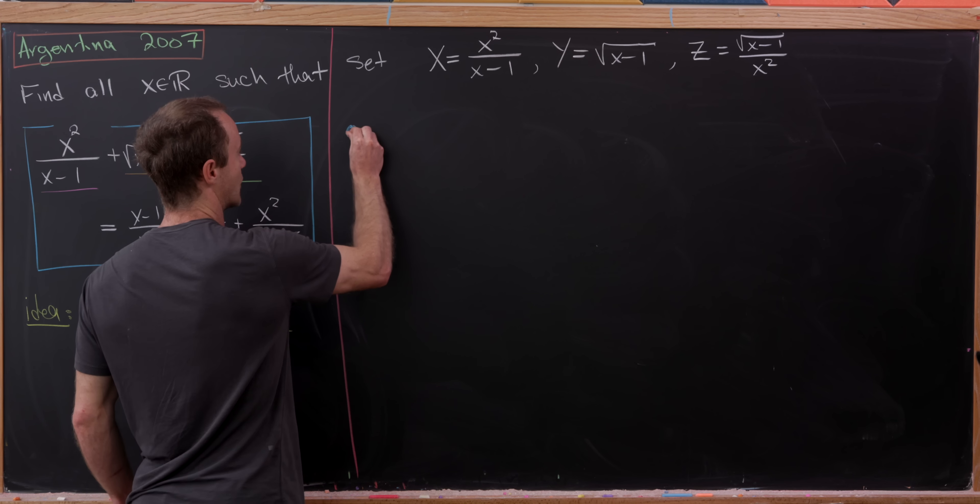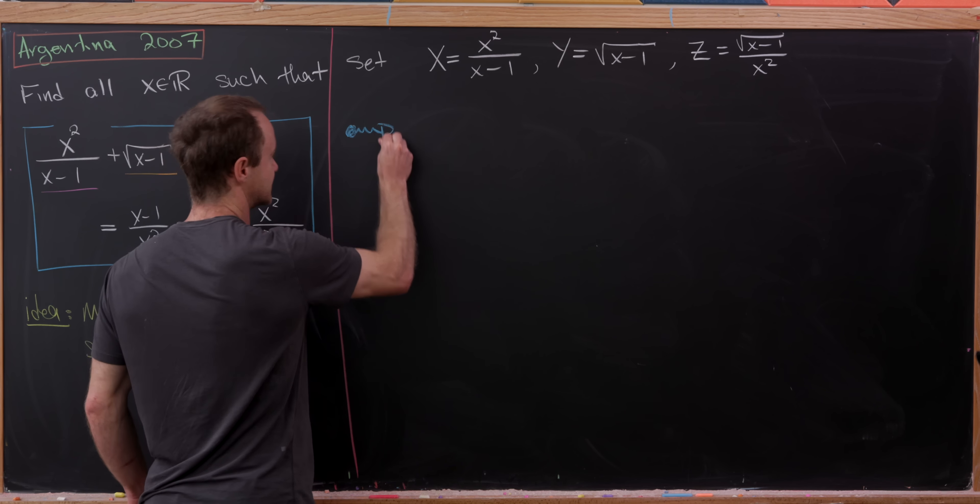Today we're going to look at a pretty nice algebra problem that presents itself as being kind of difficult and not very fun, but in the end has a nice solution. We want to find all real numbers x satisfying the equation: x squared over (x minus 1) plus the square root of (x minus 1) plus the square root of (x minus 1) over x squared equals (x minus 1) over x squared plus 1 over (x minus 1) with a square root plus x squared over the square root of (x minus 1).